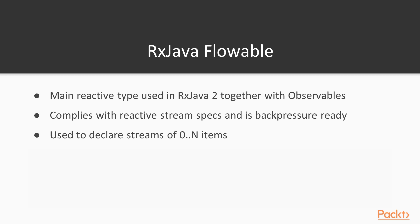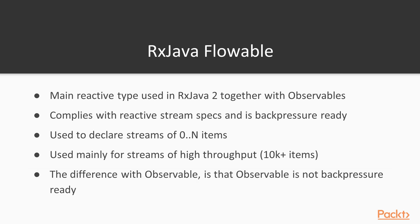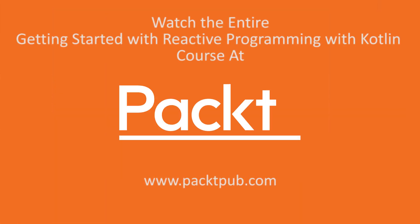The main difference between flowable and observable is that flowable is back-pressure ready and is compliant with reactive stream specs. You can see on the RxJava 2 wiki the guidelines on when to use flowable and when to use observable, but mainly you should use flowable when you're dealing with streams with high throughput of about 10k items, because when dealing with that throughput you should be aware of back pressure. Observable is not back-pressure ready, so you should be aware of what you're doing in the background.